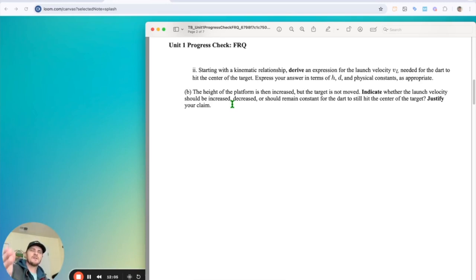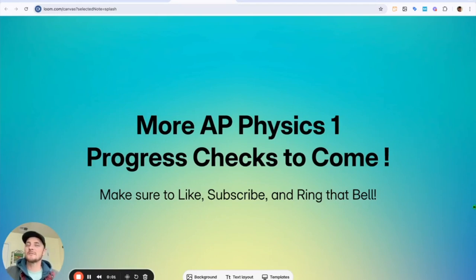So simply put, height is increased, flight time would also increase, decrease the launch velocity to compensate so that it still goes the same distance, D, and hits the target. Thanks for watching. Make sure to like, subscribe, and ring that bell for more progress checks. I'm going to do all the progress checks for AP Physics 1 this year. I'm going to get you ready for that test. They're going to get a five if you put in the hard work. Stick with me. I've got you covered. Bye.